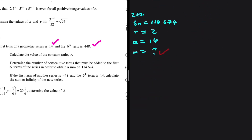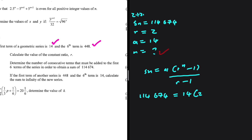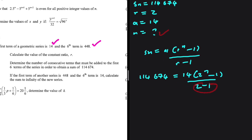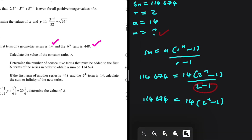We use the formula Sn equals A multiplied by (R to the power of N minus 1) divided by (R minus 1). The sum is 114,674, A is 14, R is 2. Since 2 minus 1 equals 1, we get 114,674 equals 14 multiplied by (2 to the power of N minus 1). Dividing both sides by 14 gives us 8,191 equals 2 to the power of N minus 1.